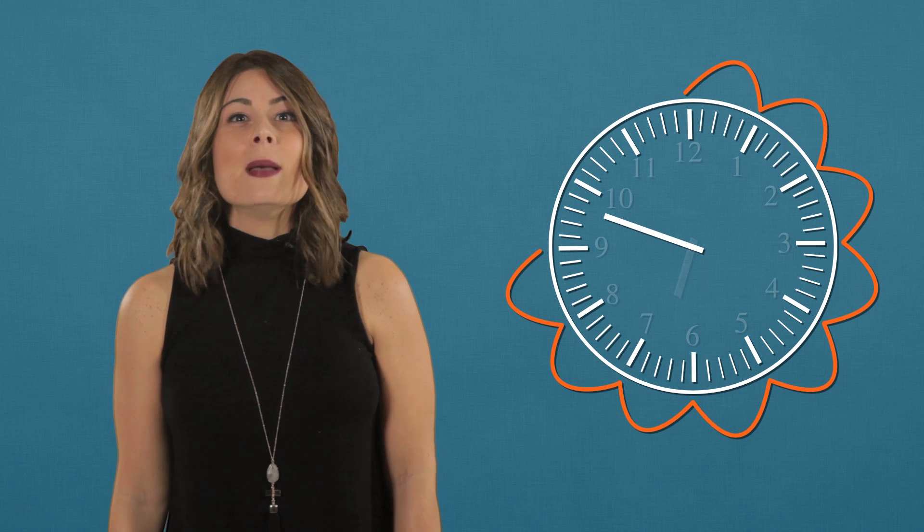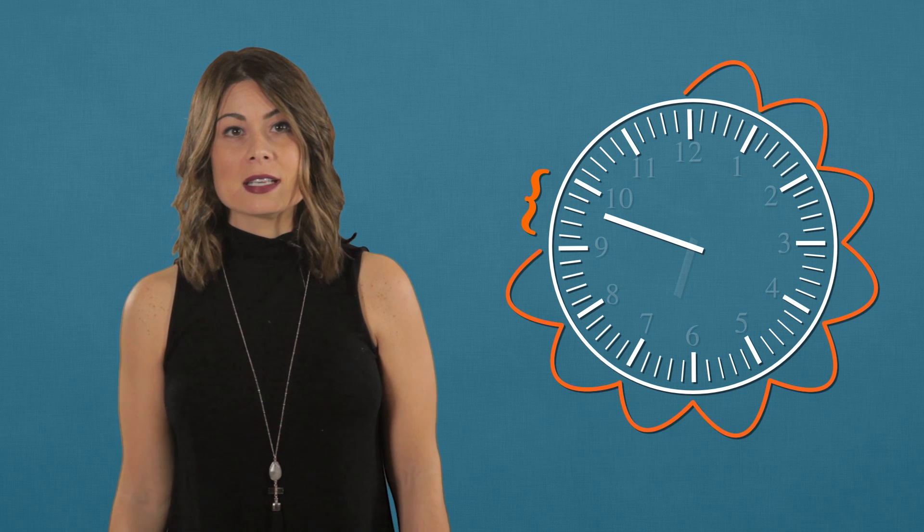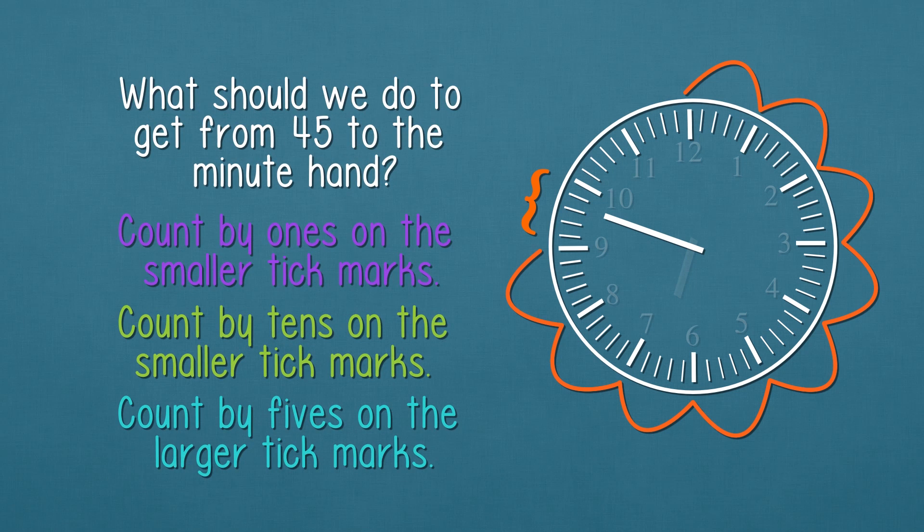Let's first count by fives. That's 5, 10, 15, 20, 25, 30, 35, 40, 45. Now, since the minute hand is pointing between these two large tick marks, what should we do next? Great. Now let's look at the hour hand.